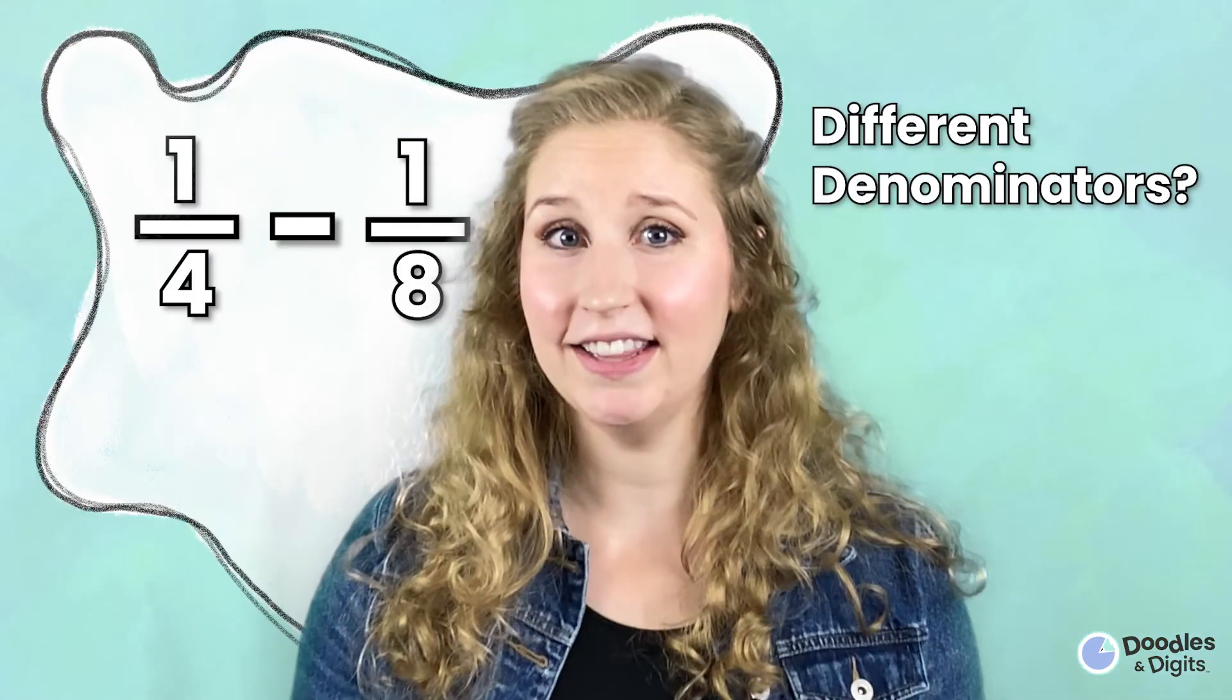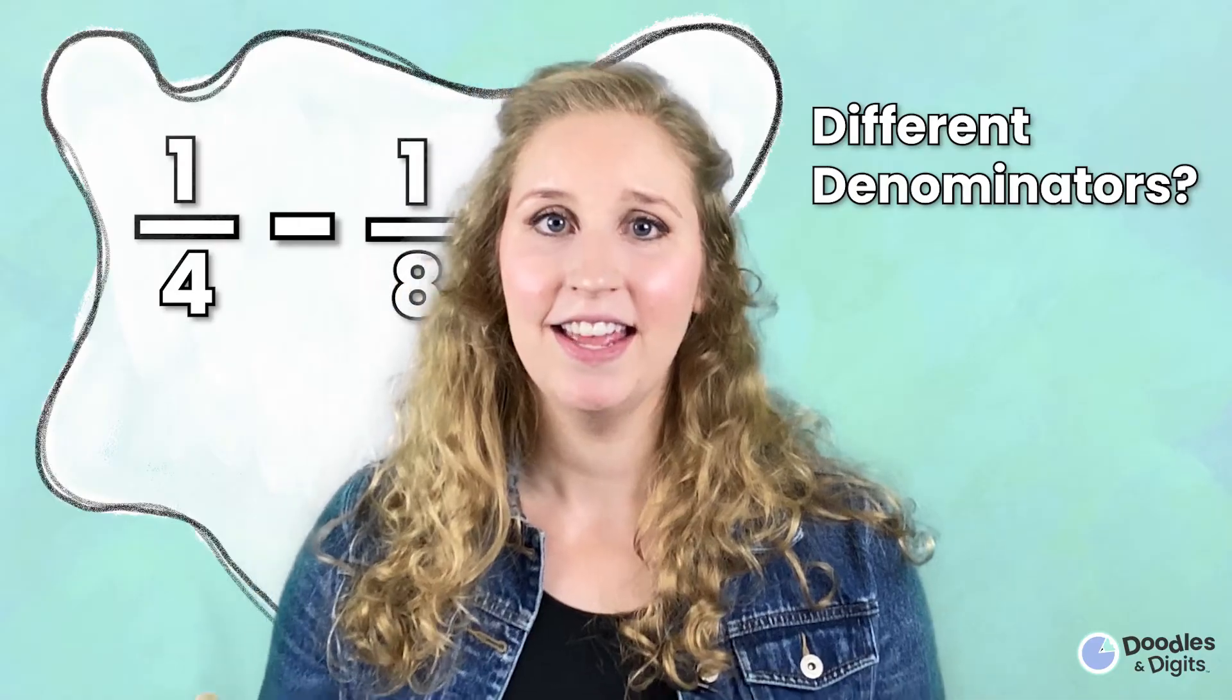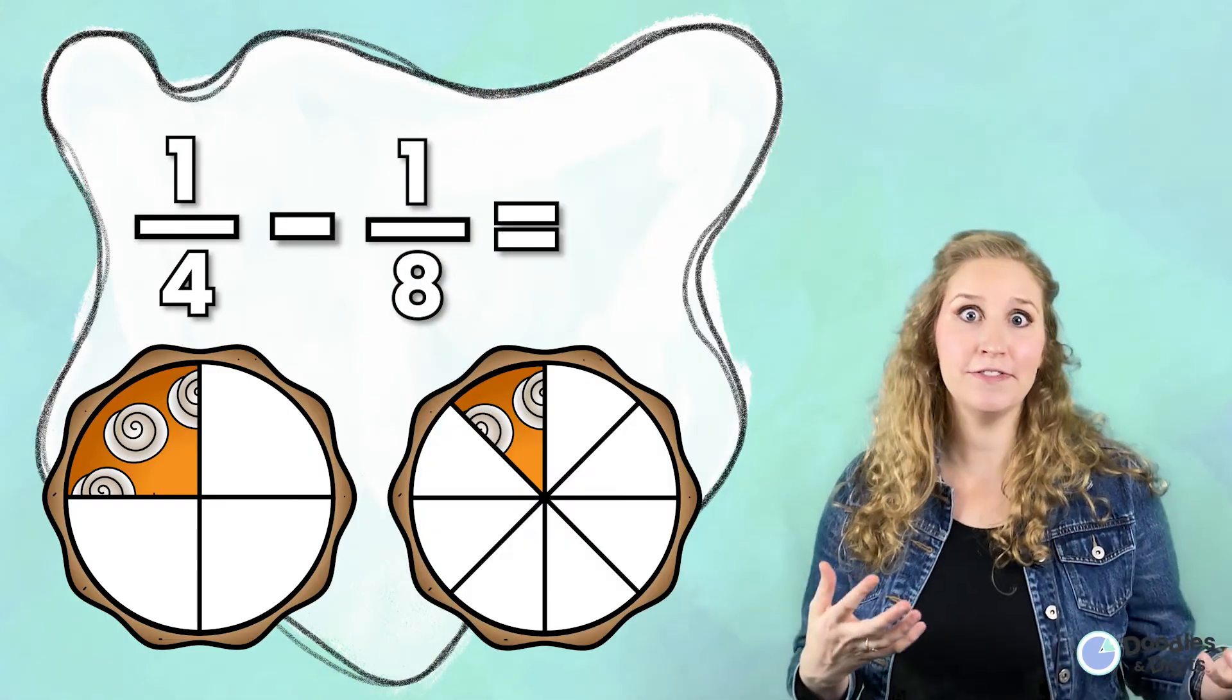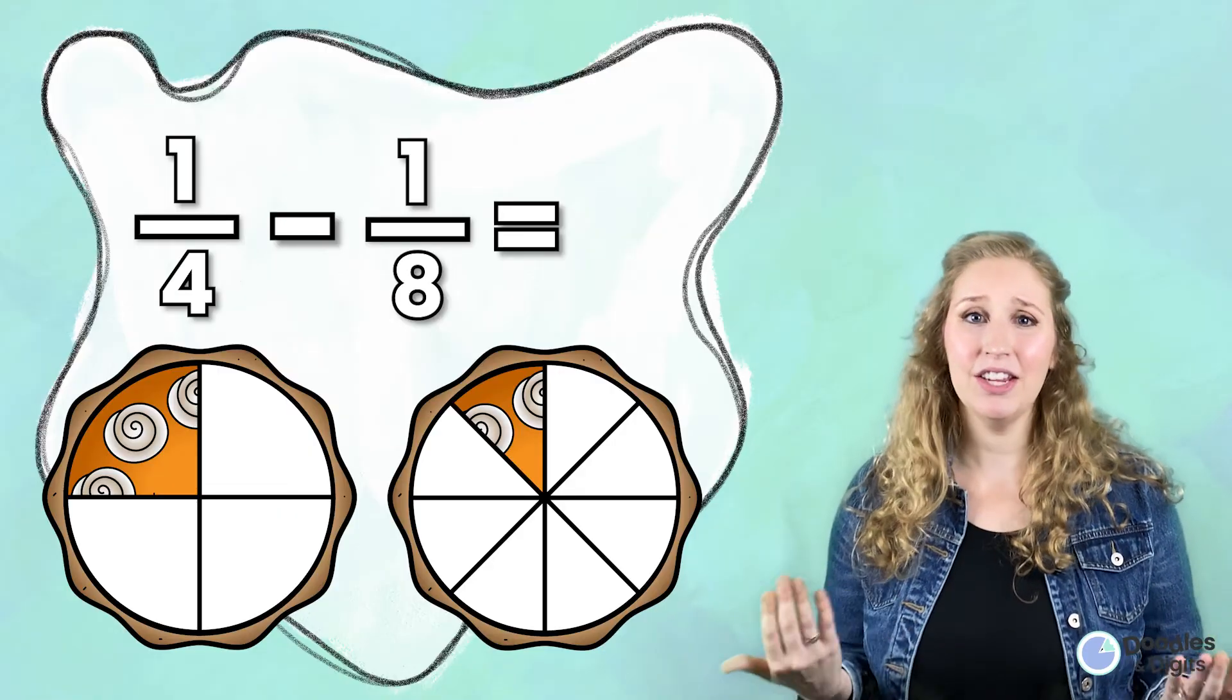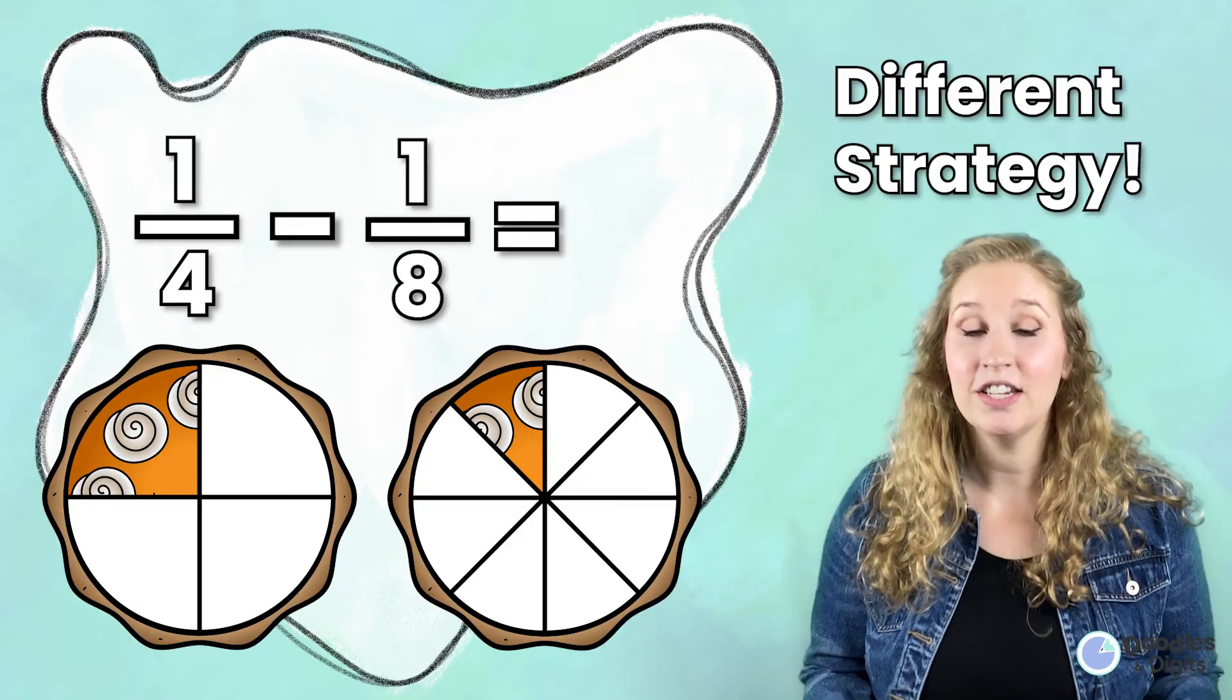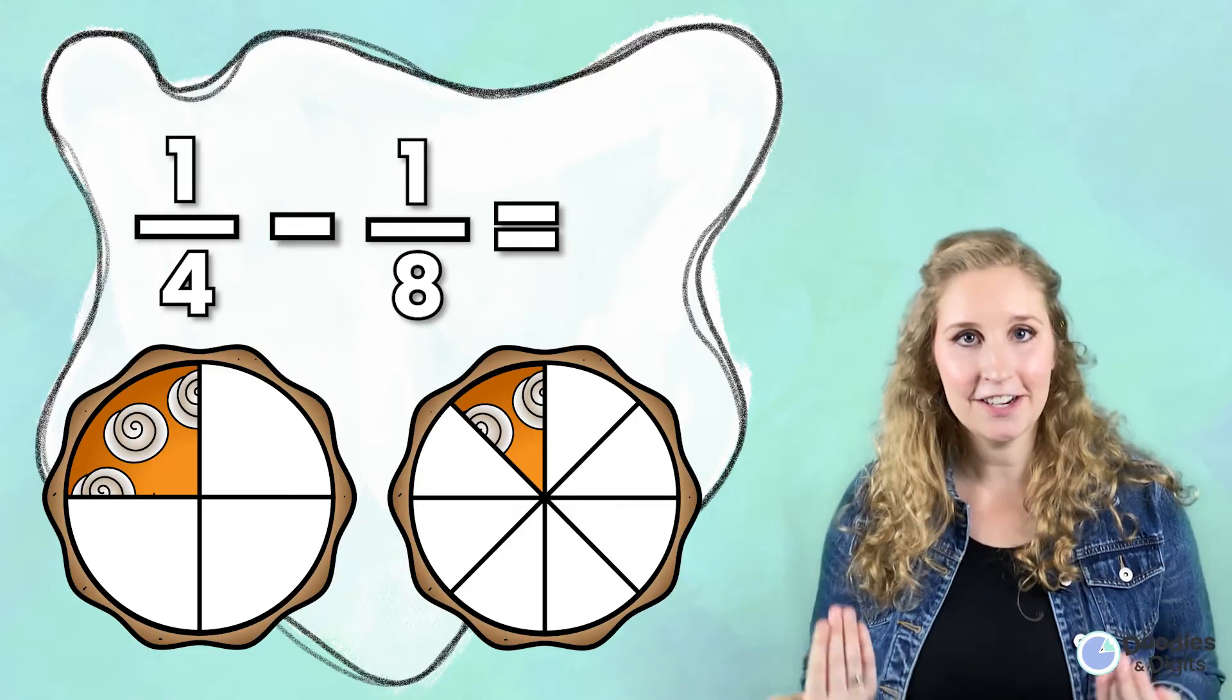Can you subtract like this if you have two different denominators? Actually, you can't because if you have two different denominators, we're talking about two different sized pieces and you can't just subtract the numerator. You actually have to do a different strategy to subtract two fractions with different denominators.